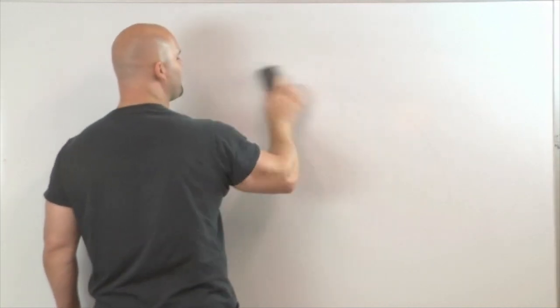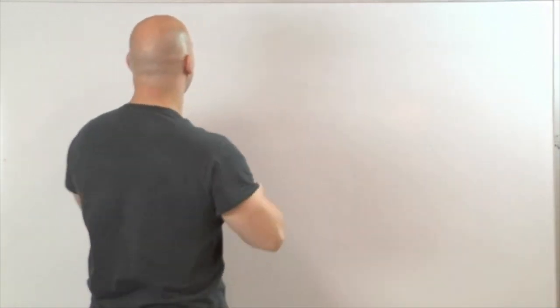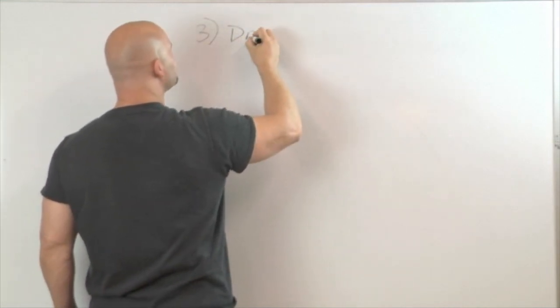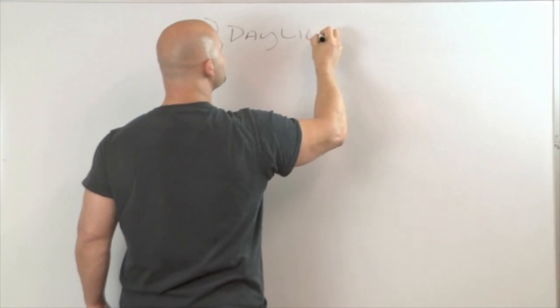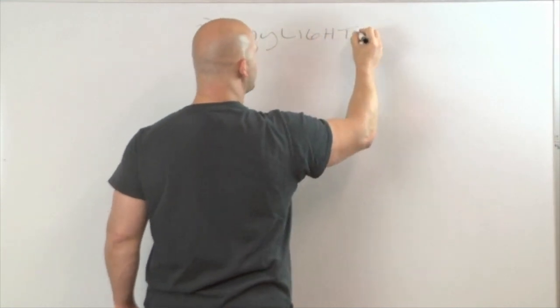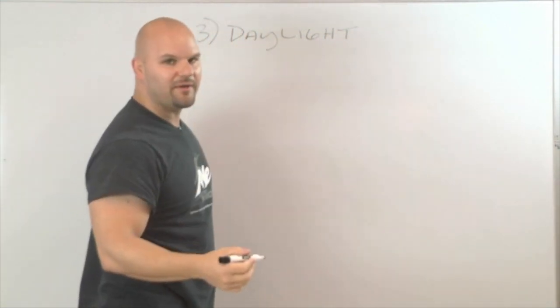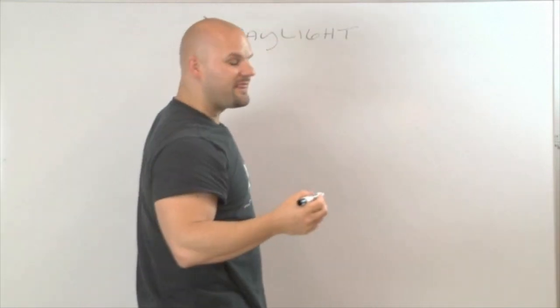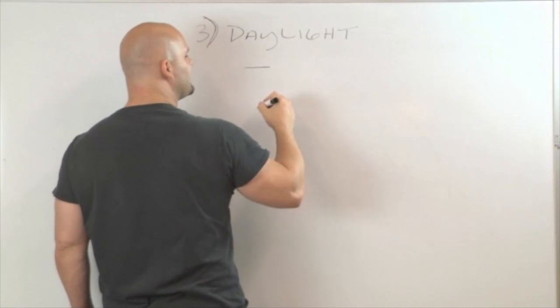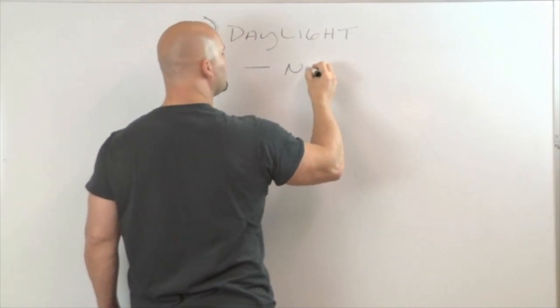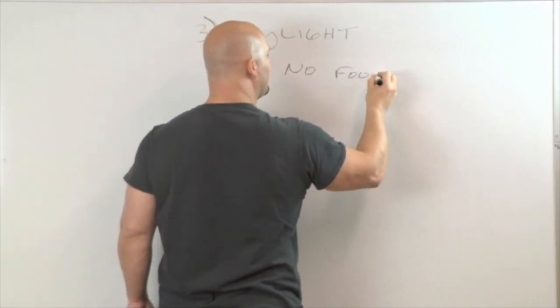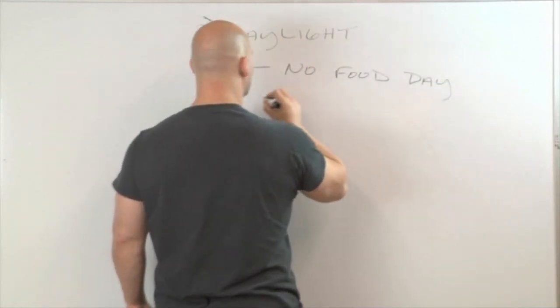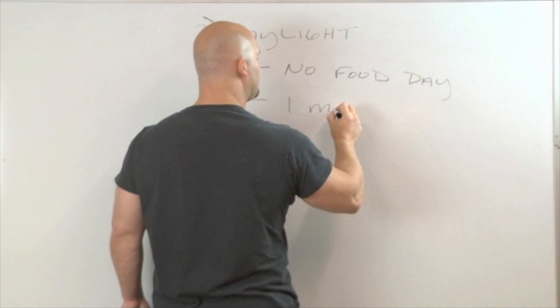Now the final type of fast that we do is called the daylight fast. So this is the third type of fast. And essentially what this means, some of the research on this comes from those who do Ramadan fasting in the Muslim world. And basically what they will do, and this protocol involves, is it involves no food during the day and then one meal at night.